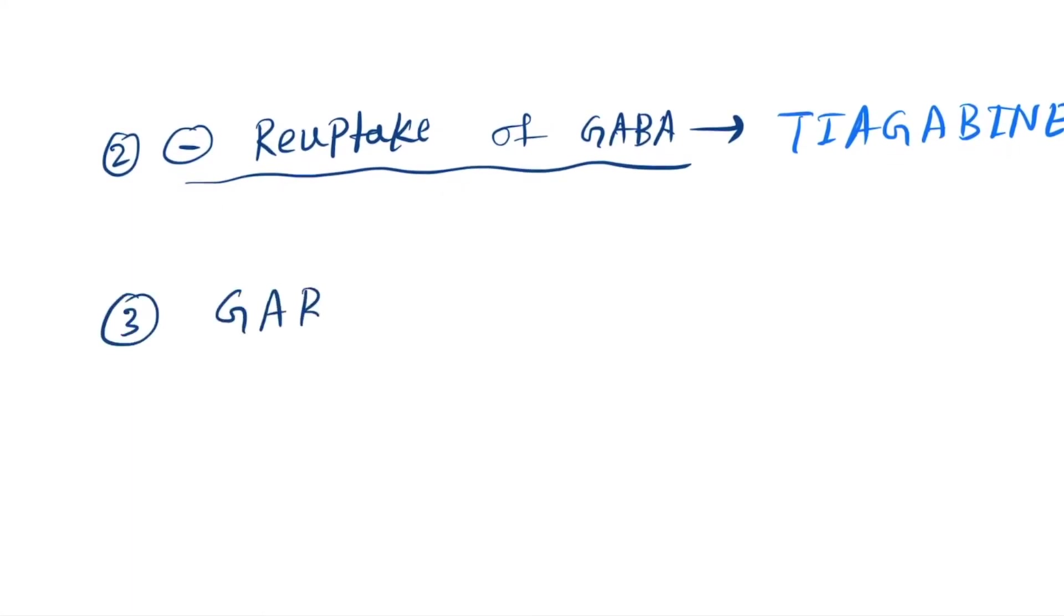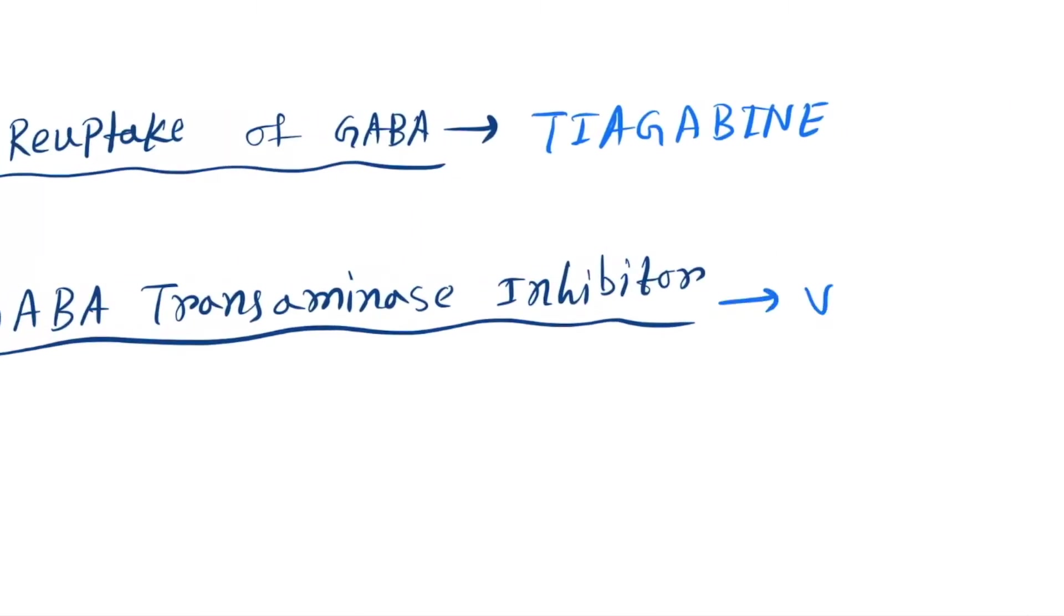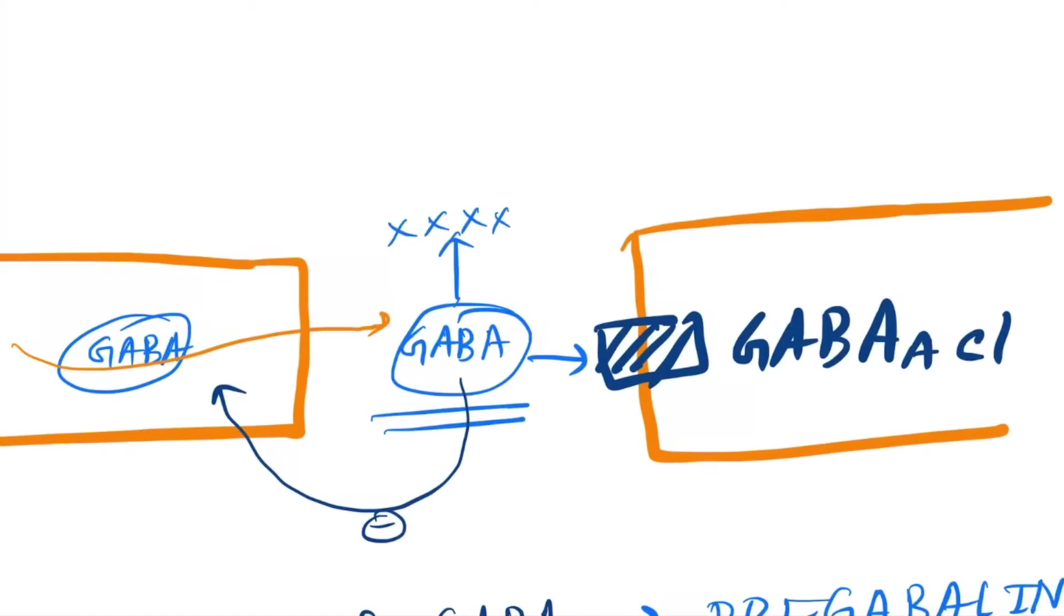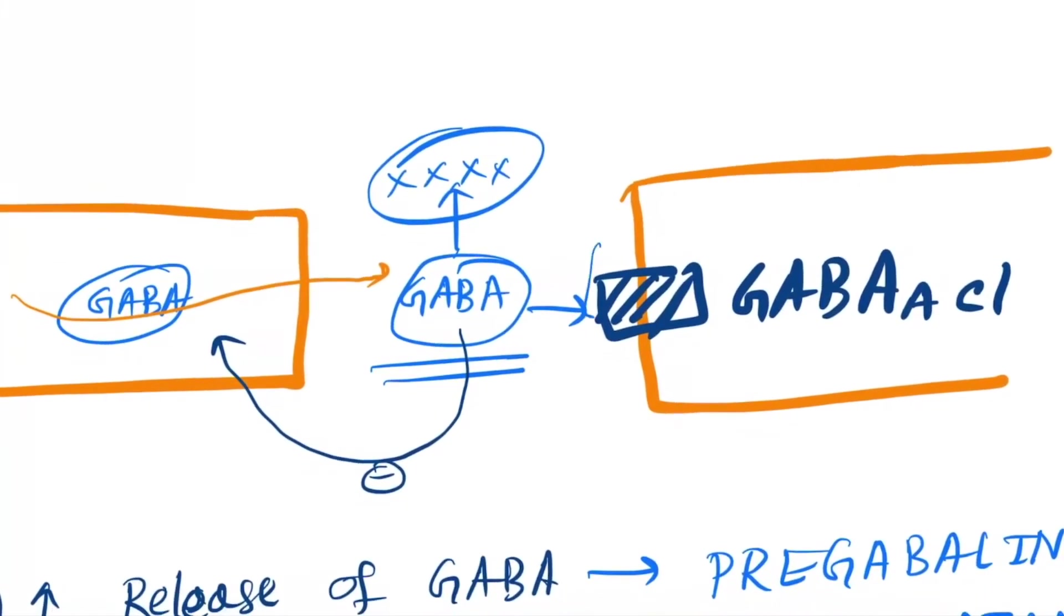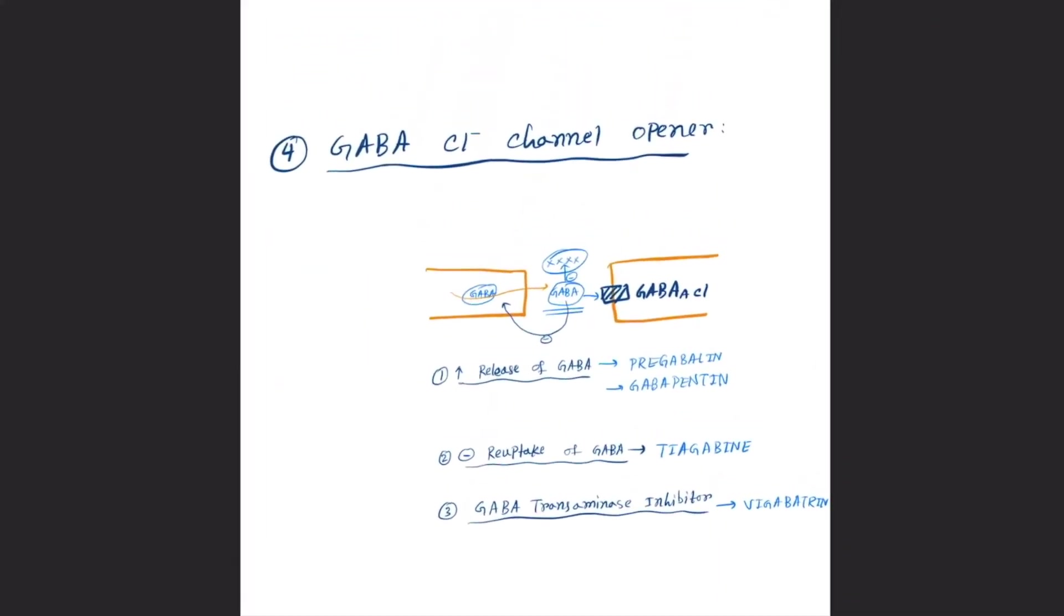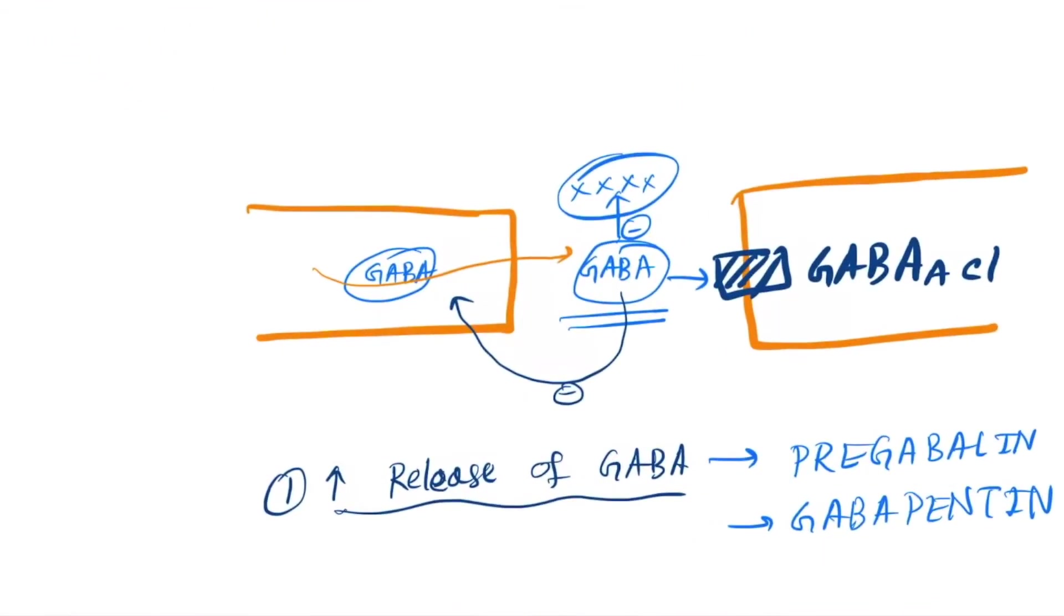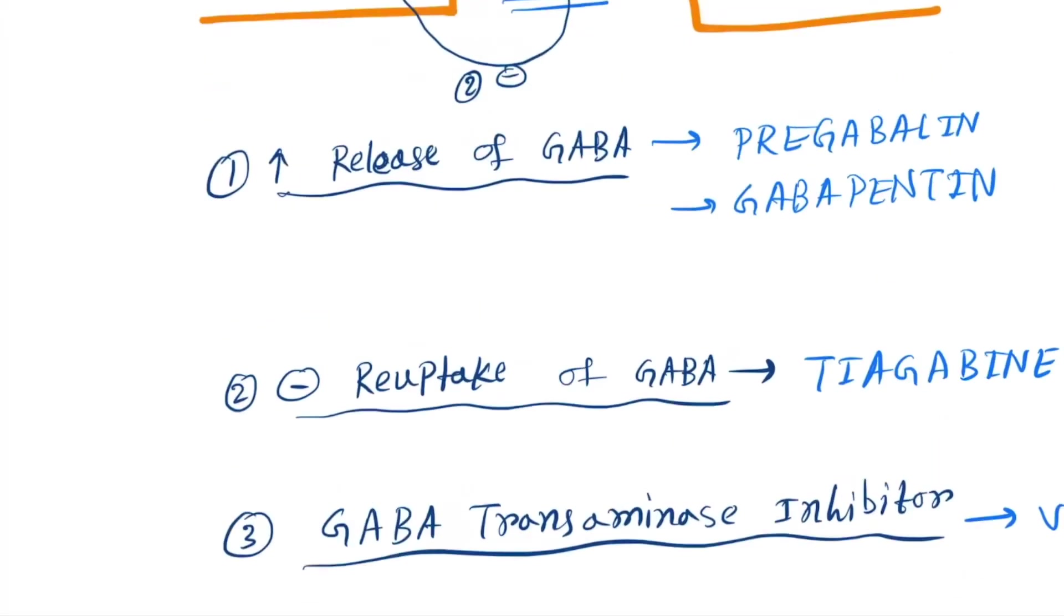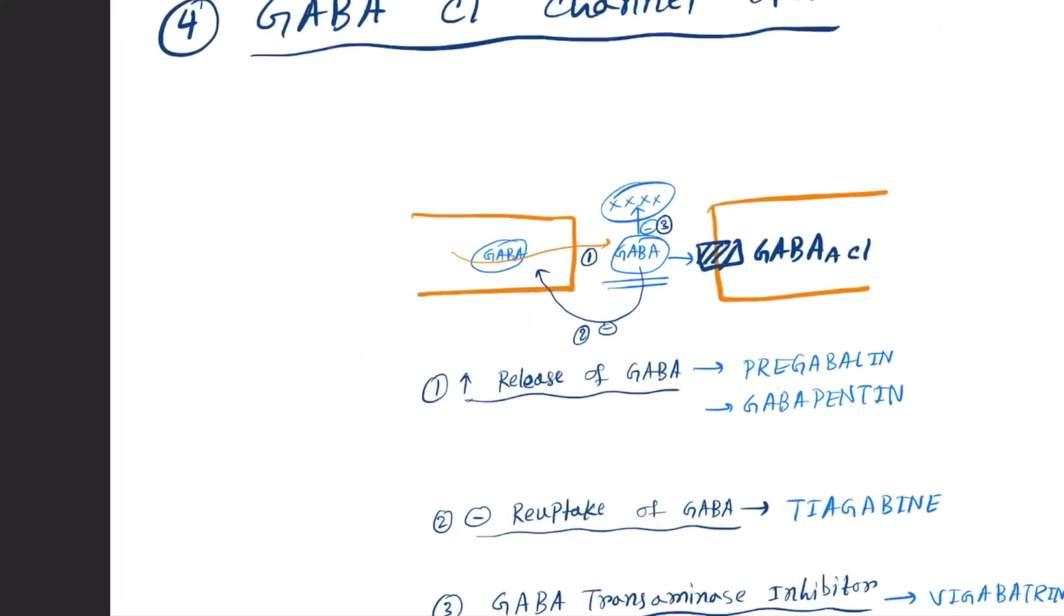Third one is the GABA transaminase inhibitor. The drug name is vigabatrin. So here the GABA will be converted into another and destroyed, so will not be effective in the receptor. So we will inhibit the transaminase activity. Let's do it: this is number one, this is number two reuptake, number three is GABA transaminase inhibitor.